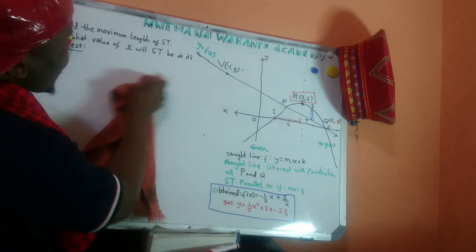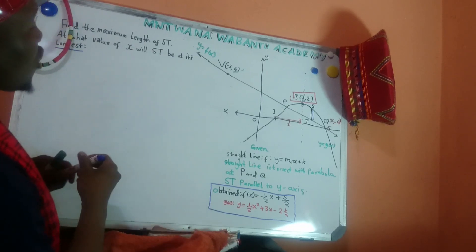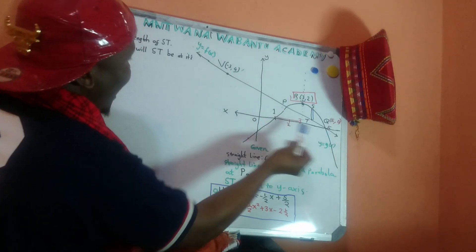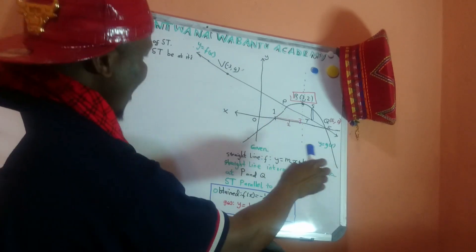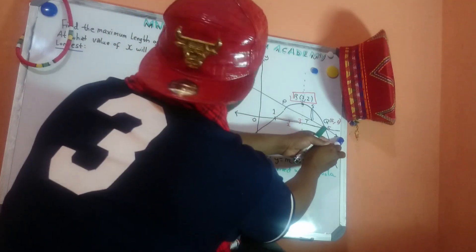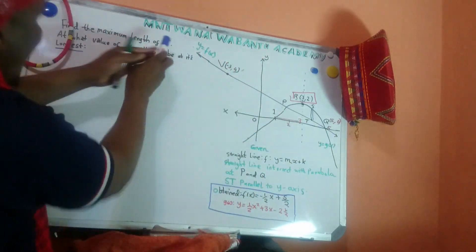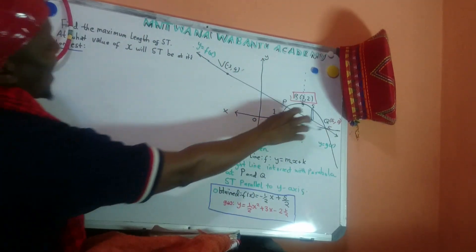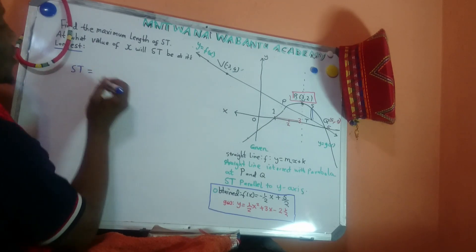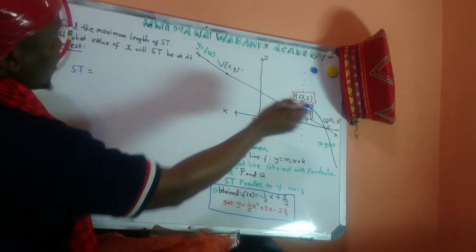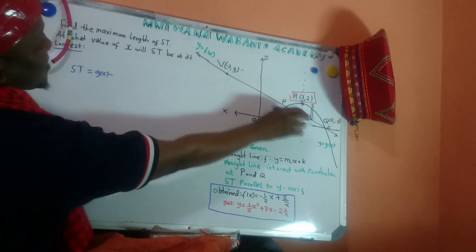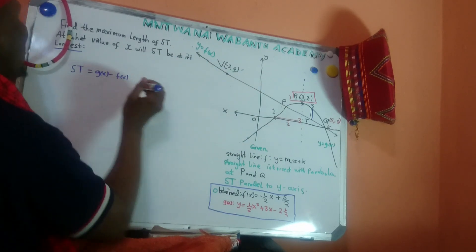Coming back to our graph - which graph is on top? G(x) is on top and F(x) is on the bottom. So we're going to say HT equals the upper graph G(x) minus F(x).